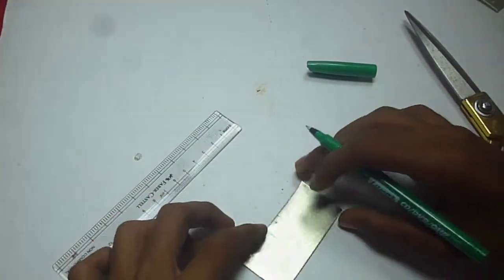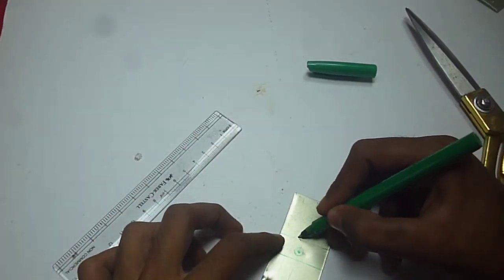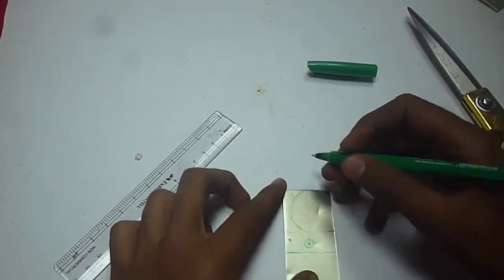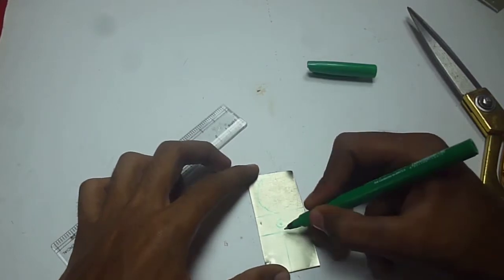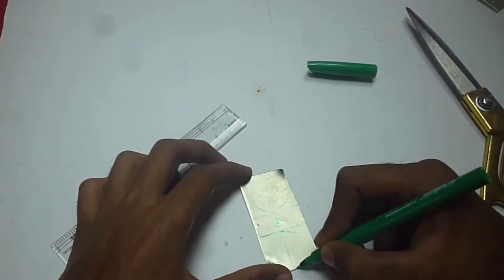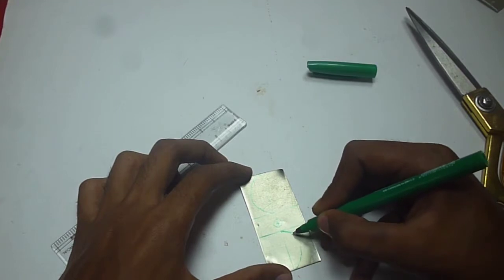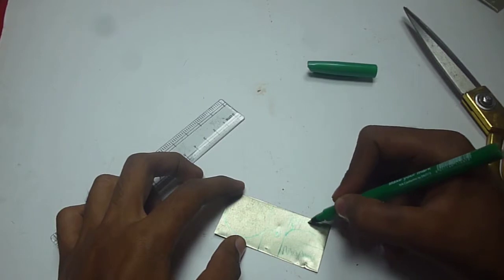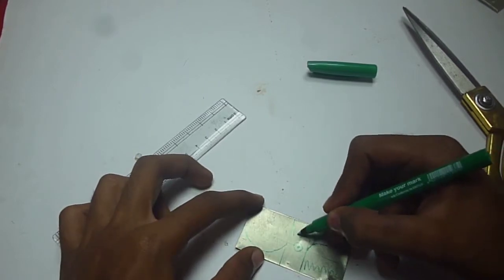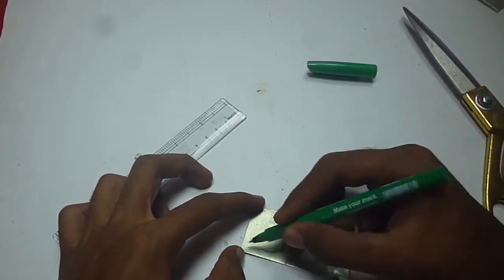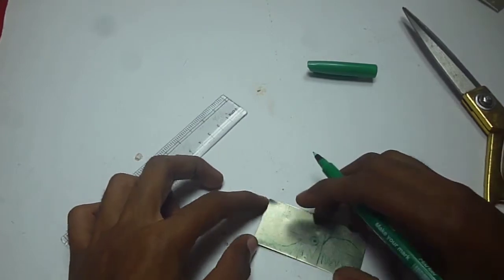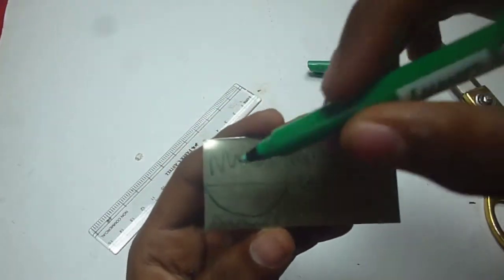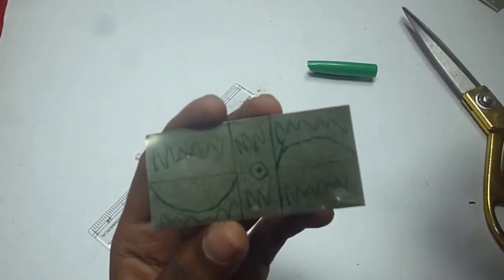Now we need to draw leaves on both sides. So this is the template. Now we need to cut the propeller from the metal sheet. You can see, with these scissors we need to cut all these parts.